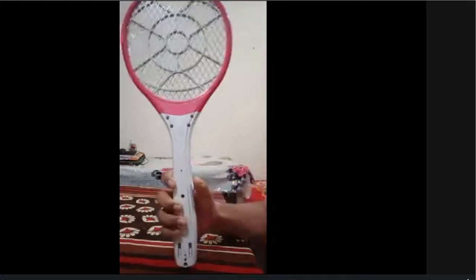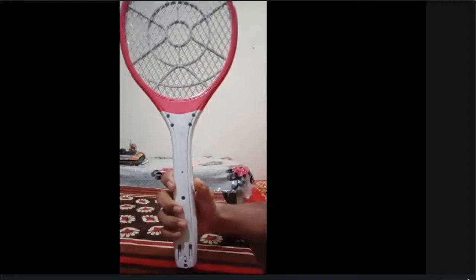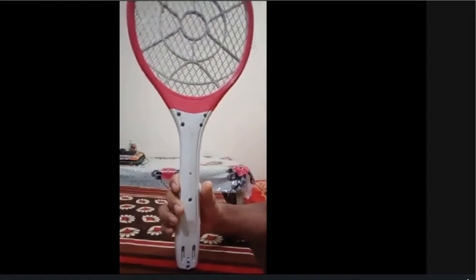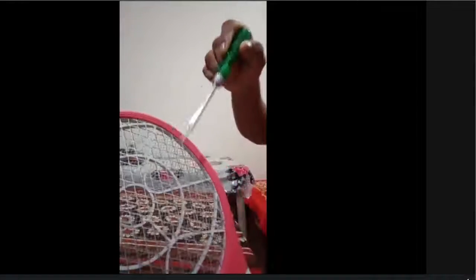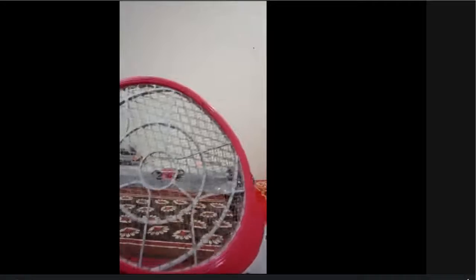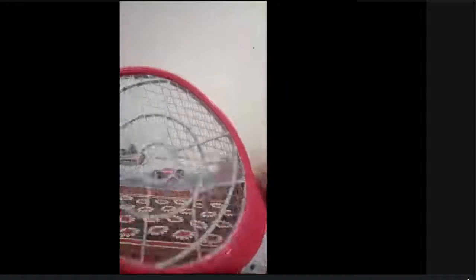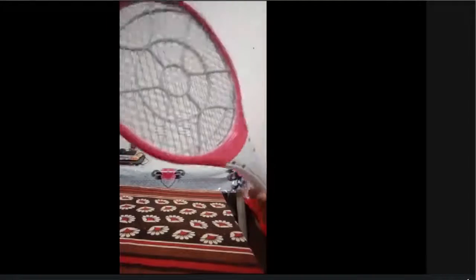So the working principle of this electric flyswatter is very easy. Actually, a high voltage power supply is given to the metal mesh by pressing the switch and because of its inside mechanism. So when a mosquito flies between these meshes, it creates a low resistance path between the meshes. So the high voltage creates an arc through the body of the mosquito, which eventually kills it.